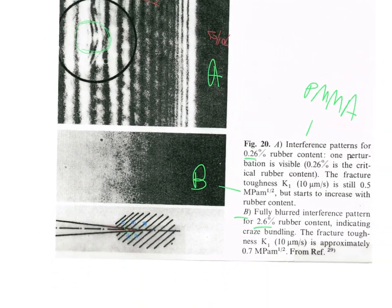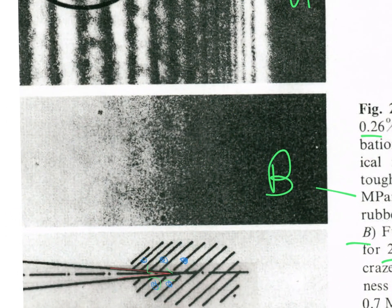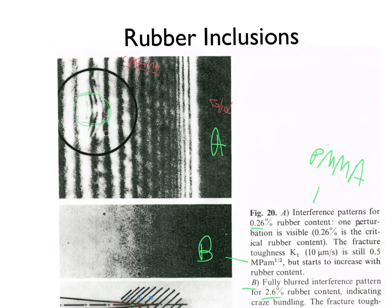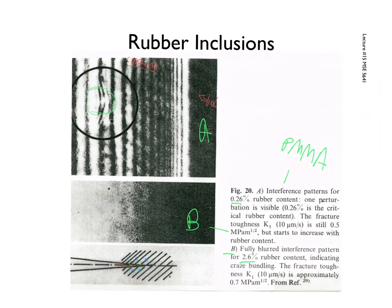If we go to 2.6% rubber, we actually lose crazes altogether. Enough rubber and crazes stop — which should make sense. In order for fibrils to form, all the entanglement and stress has to develop and you see it really stretched out. But if you add enough rubber, the whole thing becomes soft and all that goes away. In fact, we stop seeing cracks — it starts to deform plastically. With this technique, we can look at relatively localized changes in the microenvironment associated with craze zones and start to really understand what's going on in these systems.